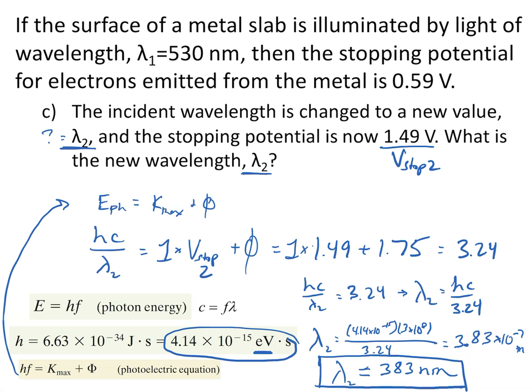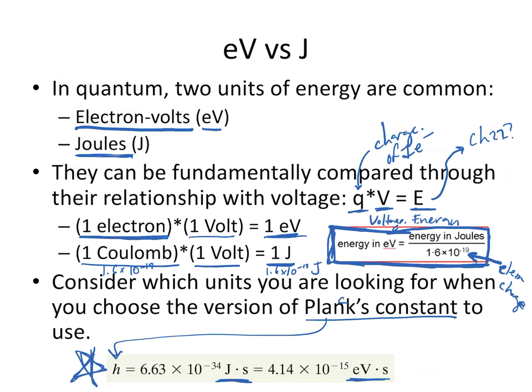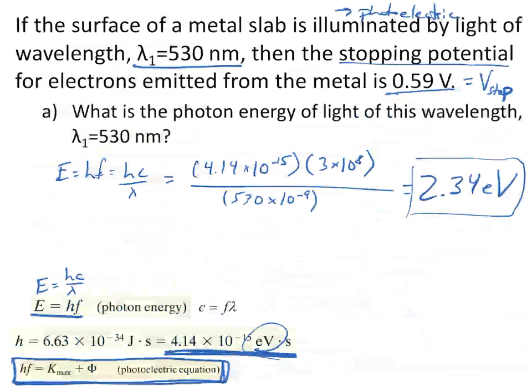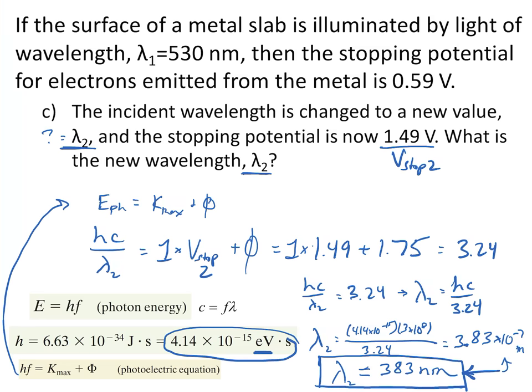Alright, so that's a multi-step photoelectric effect problem — actually an example from a previous exam. I've done this all in electron volts, but you could do it in joules and get the same answer for wavelength. For the exam, I'll accept both joules or electron volts, as long as it's correct. Please be comfortable identifying which value of H to use, and know how to convert between electron volts and joules. Alright, that's it for this micro lecture — have a good day.